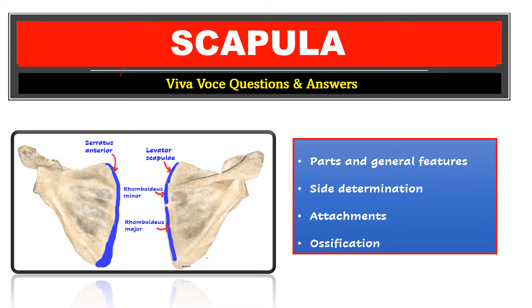This video is on scapula, the viva voce questions and answers that are asked during practical examination. In this video, we will consider the parts and general features of scapula, its side determination, the attachments on scapula, and its ossification.